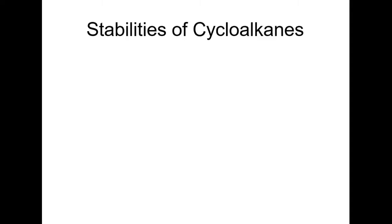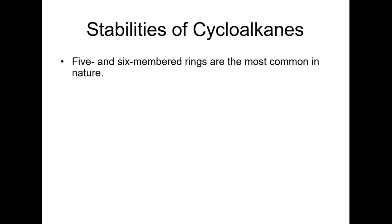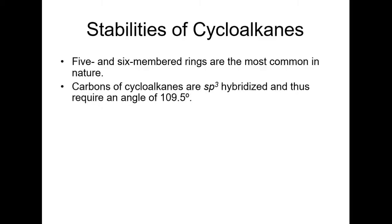Like we talked about Newman projections and the stability of straight chain molecules, now we're going to talk about the stability of cyclic alkanes. A very interesting phenomenon happens with these — they are not flat molecules. If they were flat molecules, you would have a tremendous amount of strain. Five and six-membered rings are the most common in nature, and we're going to find out why now, because it's based on stability.